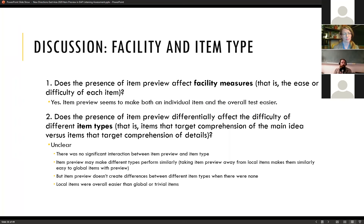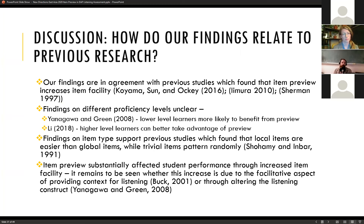To review: item preview increases item facility, making items and tests easier. Local items appear to be the easiest type of item. It's not clear whether item type and item preview formally interact. Our findings agree with previous studies that found item preview increases item facility. We're not sure what the results mean in terms of different proficiency levels given those changes observed when item preview was added to total scores.